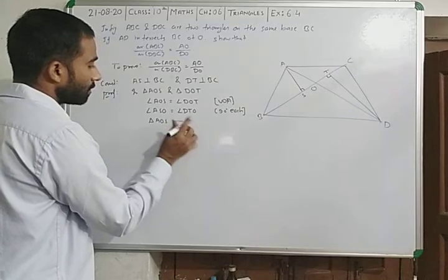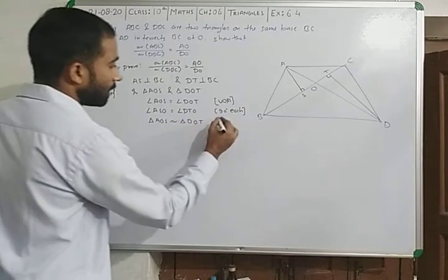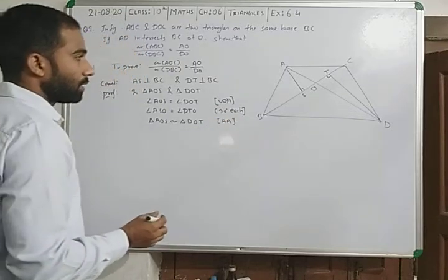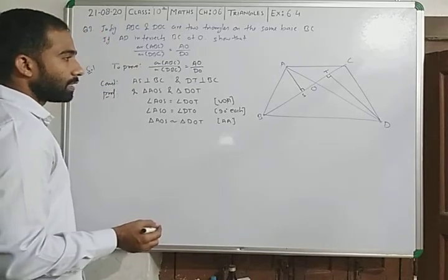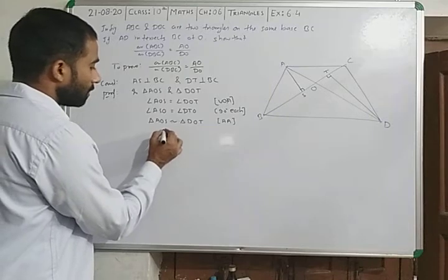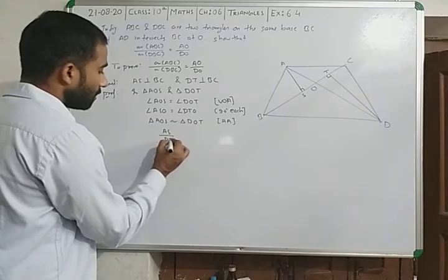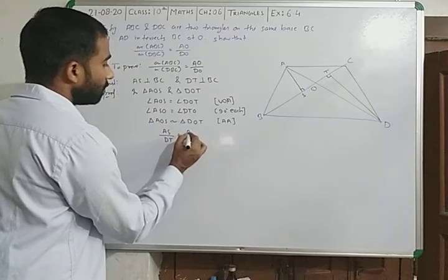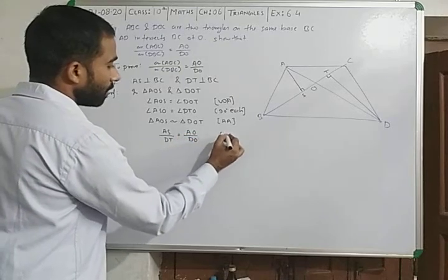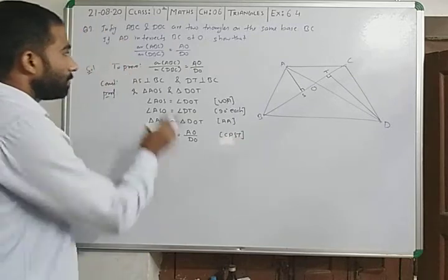Therefore triangle AOS is similar to triangle DOT by angle-angle-angle similarity. Now we can say the ratio AS upon DT is equal to AO upon DO by CPST.